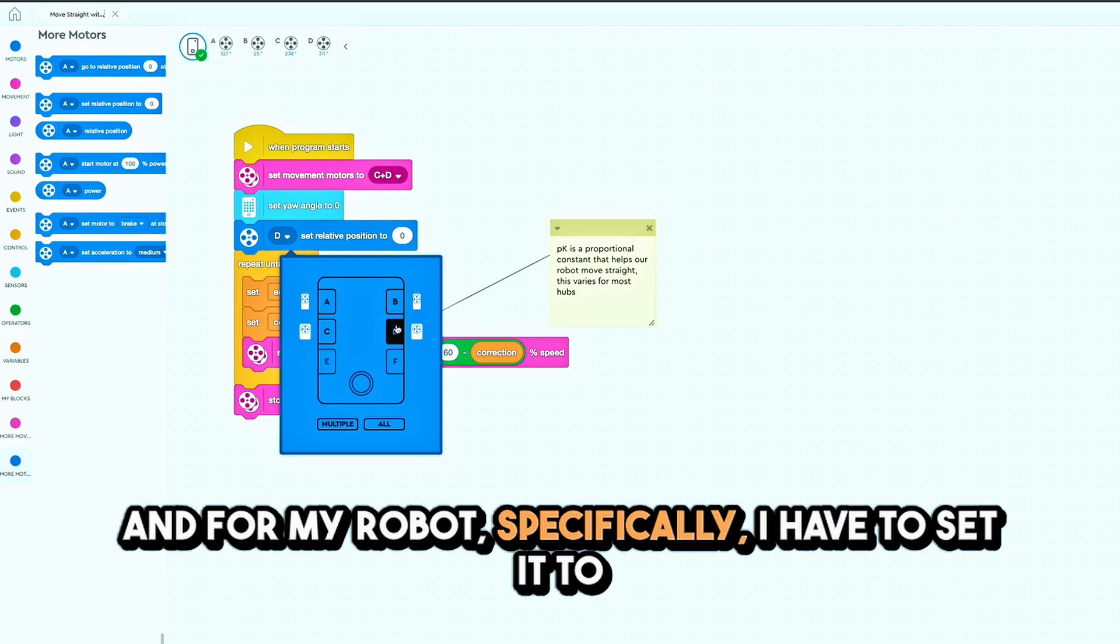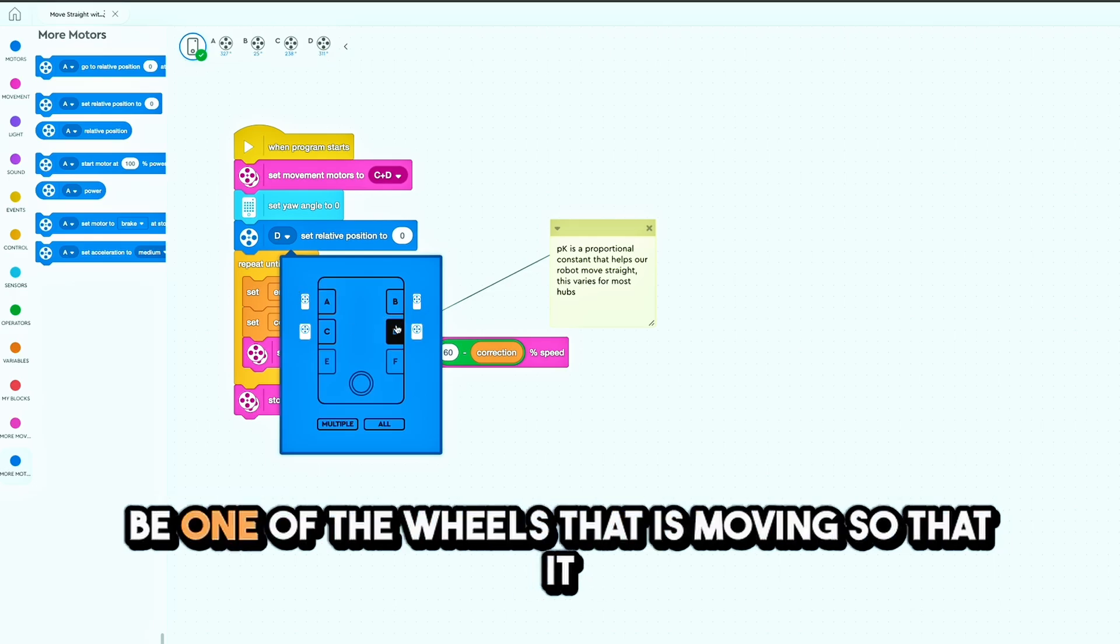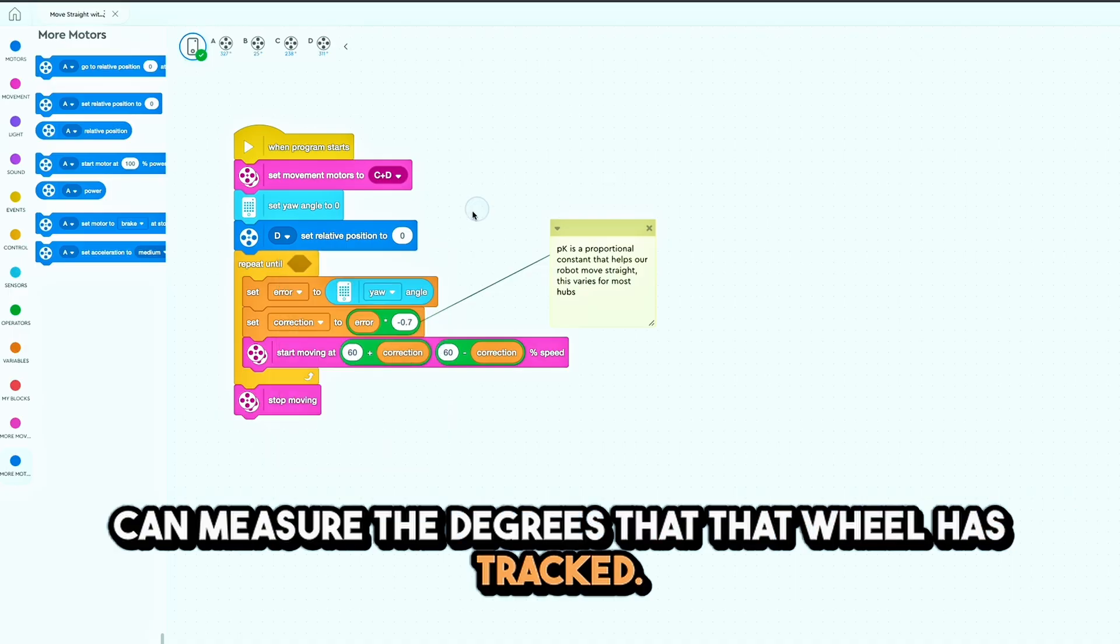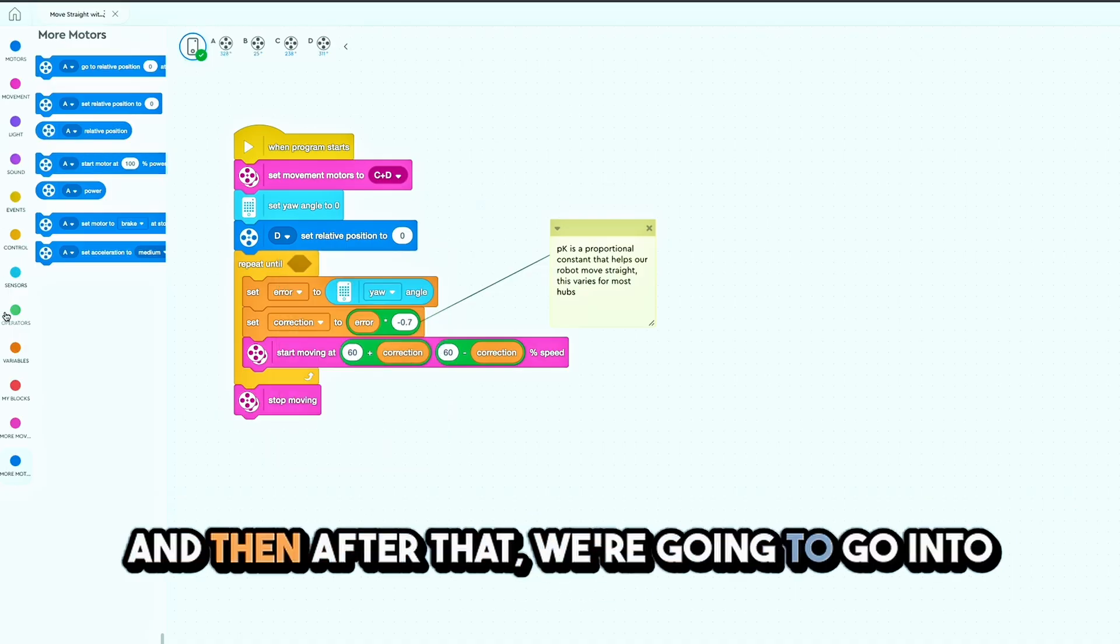And then after that, we're going to go into operators and drag out a greater than block. This block will dictate if our motor has gone over a certain amount of degrees.